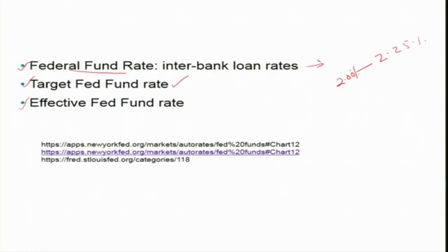The actual Fed fund rate is determined by interbank market forces — the demand and supply of reserves. What the Federal Reserve System can do is plant a target range, for example between 2% and 2.25%, and that is the target Fed fund rate — what we read about in newspaper reports of FOMC decisions.